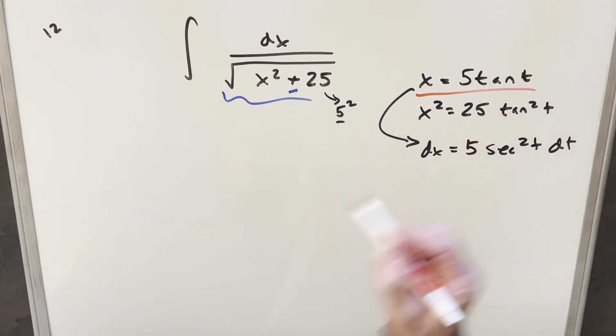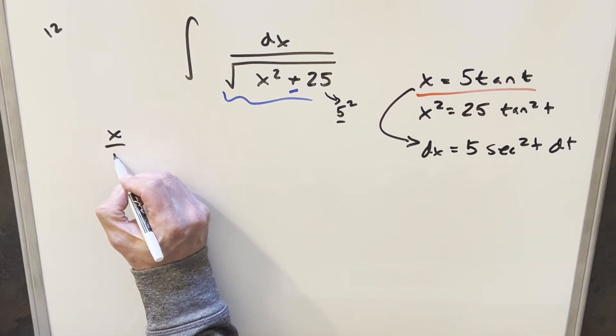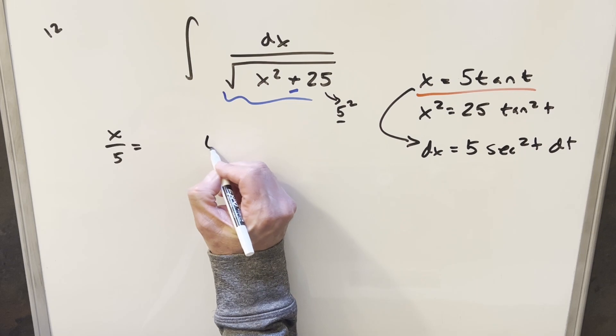And then also what I want to do is just let's just take this and solve for t. So then from this, I can just divide by 5 on both sides. And we end up with x over 5 is equal to tan of t.